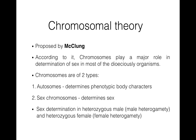Chromosomes are of two types: autosomes and sex chromosomes. Autosomes determine phenotypic body characters, while sex chromosomes determine sex. Sex determination in heterozygous males is different from heterozygous female sex determination.